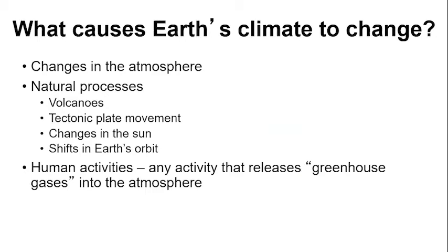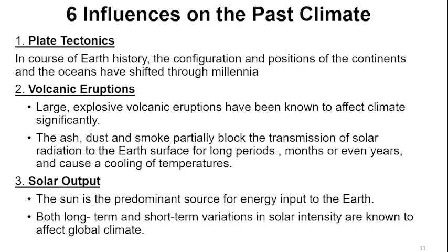For this balance to hold, we have things that drive changes in the atmosphere. These changes can either be natural processes — things that are naturally occurring, like volcanoes, tectonic plate movement, or shifts in the Earth's orbit — or they can be related to human activities, especially those that release greenhouse gases into the atmosphere. Let me go into the six influences of the natural climate change.